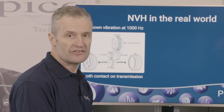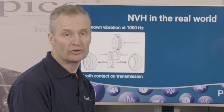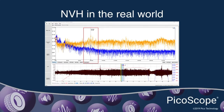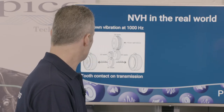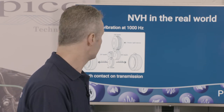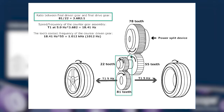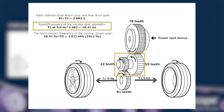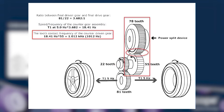Having an understanding of the tooth count for various transmission components — we know T1 is at 5 hertz, so we know the rotation of the crown wheel. Working out the ratio between the final drive gear and the driven gear: 81 teeth on the driven gear, 22 teeth on the drive gear, gives a counter gear ratio of 3.682:1. With the counter gear rotation now at 18.41 hertz and 55 teeth on the counter gear, multiplying frequency by tooth count gives 1,012 hertz — approximately 1 kilohertz.